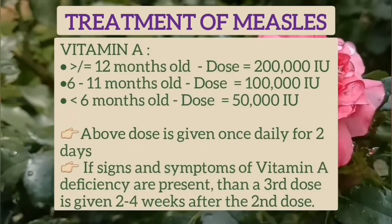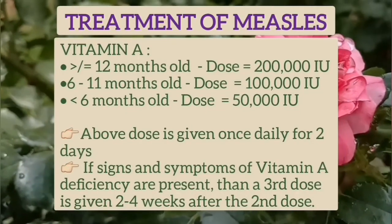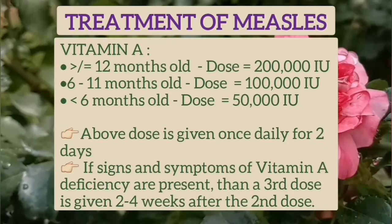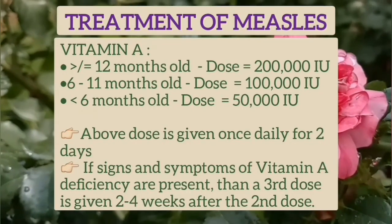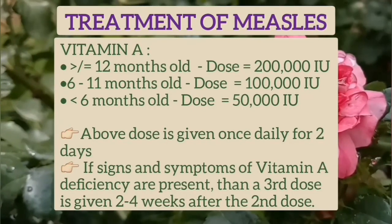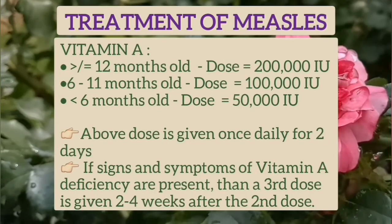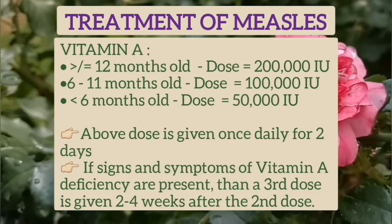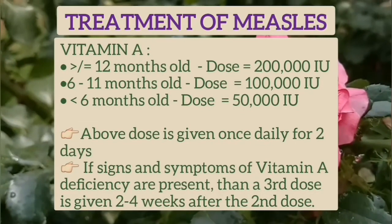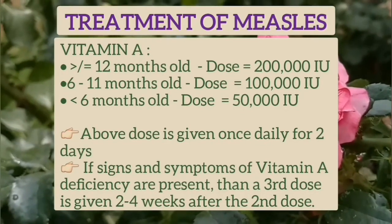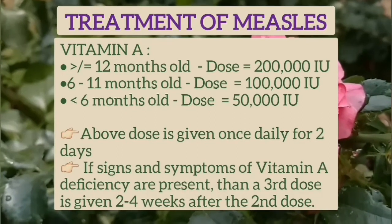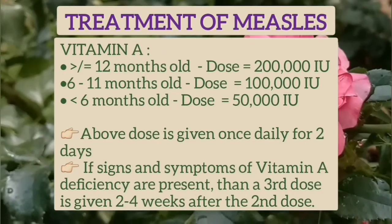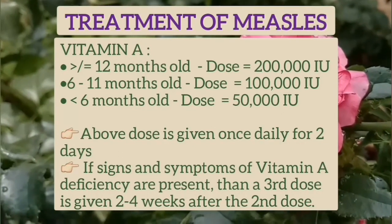Vitamin A is recommended in measles. In children more than 12 months, the dose is 200,000 units; in 6 to 11 month olds, it is 100,000 units; and in less than 6 month olds, it is 50,000 units. This dose is given once daily for 2 days. However, if signs and symptoms of vitamin A deficiency are present, a third dose is given 2 to 4 weeks after the second dose.